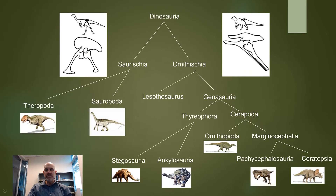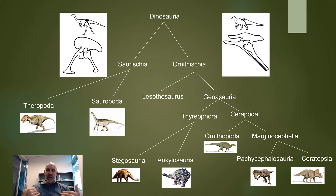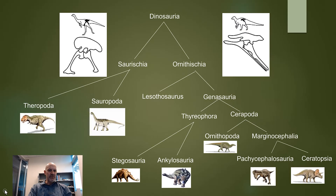Here is your cladogram. This week, I want you to add to and redraw the cladogram you've been working on, adding in Ceratopsia. Remember, the synapomorphy here is going to be the rostral bone. Go ahead and redraw it, keep practicing — that's the end of the lesson. See you next time.